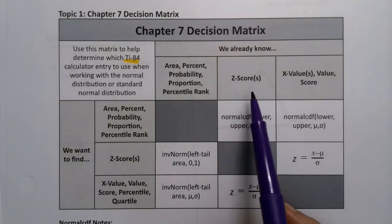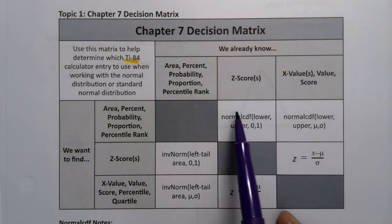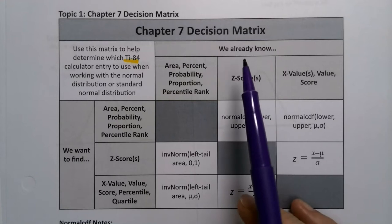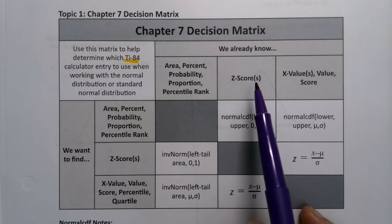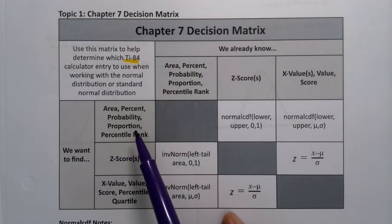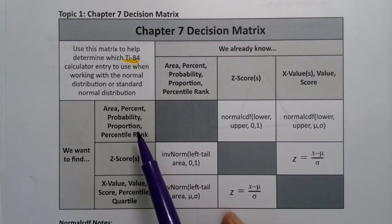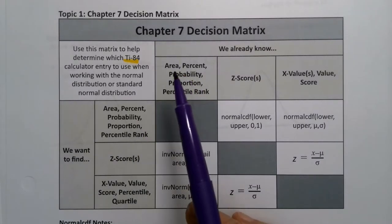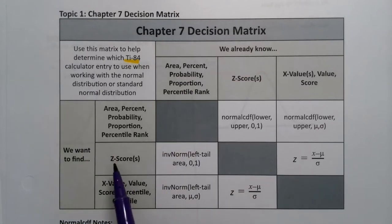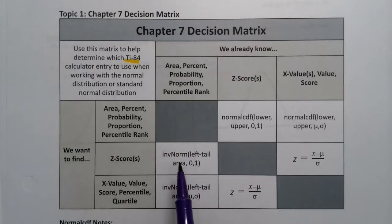In this decision matrix, all we've used so far is normal CDF because for that entire last example we were given particular z-scores and asked to find the probabilities or percentile ranks. But we also need to be able to go backwards. What if we already know the probability or proportion and want to find the z-score? For that we're going to use inverse norm.